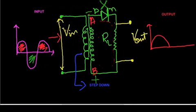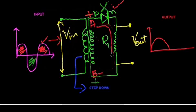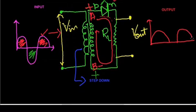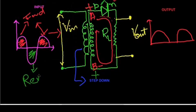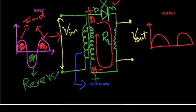Then again the positive half cycle enters, making terminal A positive and terminal B negative, making the diode forward biased. Hence current will start to flow inside the secondary circuit and you will get some output across RL. In summary, the positive half cycles make the diode forward biased so current conducts, while the negative half cycle makes the diode reverse biased so no current flows and no output is obtained.